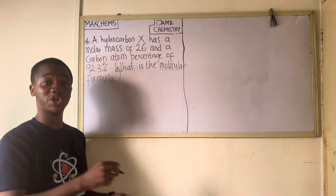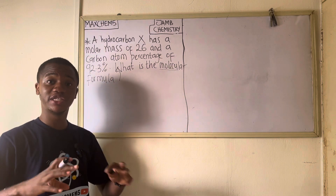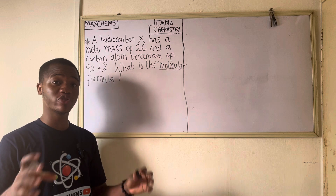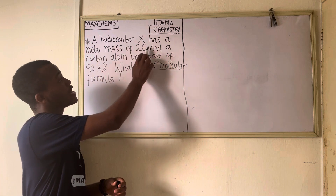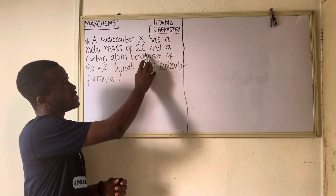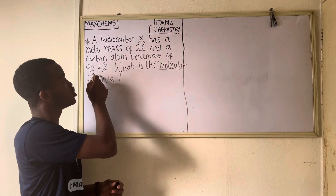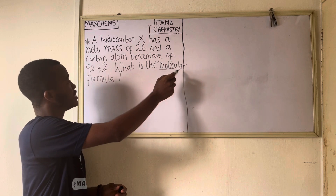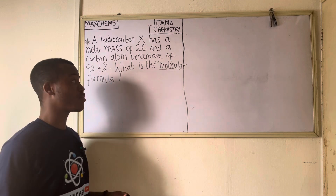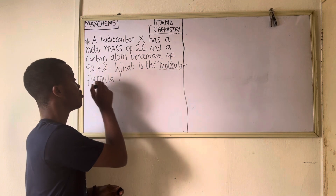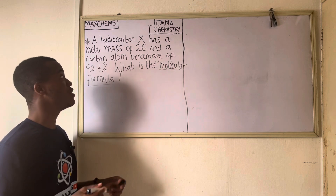Let's say you see this kind of simple question in your chemistry exam — how will you solve it? It is very simple, let us solve it together. The question says: a hydrocarbon X has a molar mass of 26 and a carbon atom percentage of 92.3 percent. What is the molecular formula? So what we are looking for in this particular question is the molecular formula.